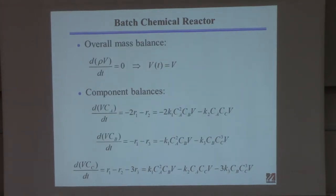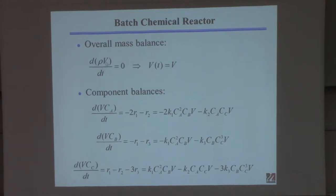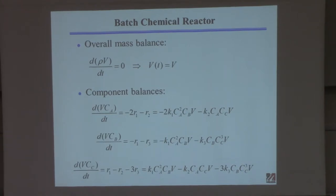The overall mass balance: what comes in? Nothing — no flow in. What comes out? Nothing. Mass is not generated. So the right-hand side is zero. Rho times V is the mass in the tank; if its derivative is zero and density is constant, then dV/dt is zero, meaning V is constant. No great surprise — you've just proved volume doesn't change.